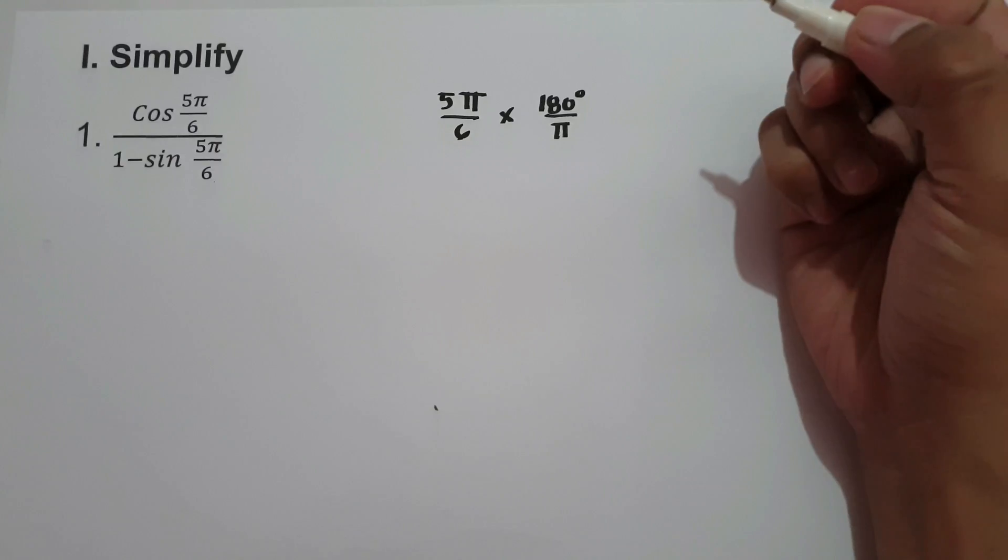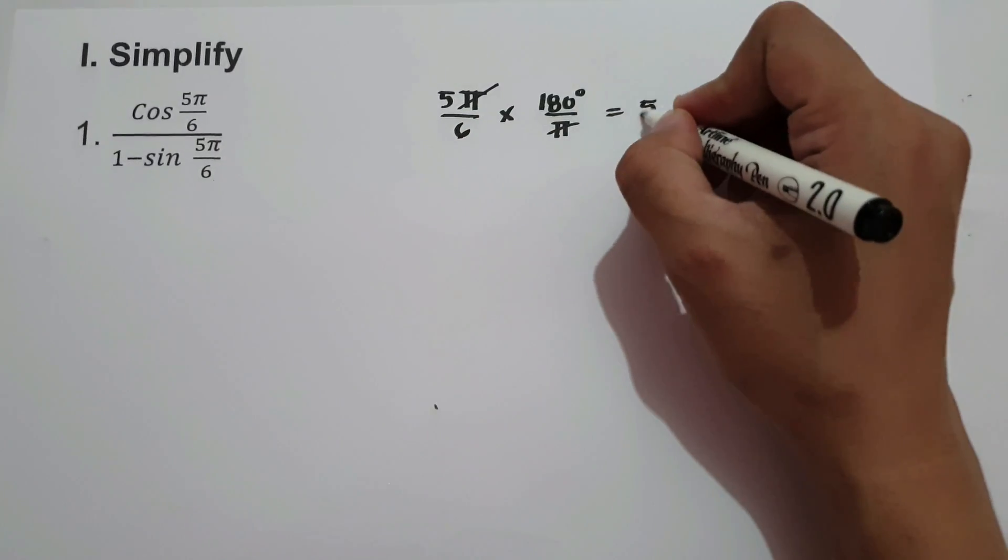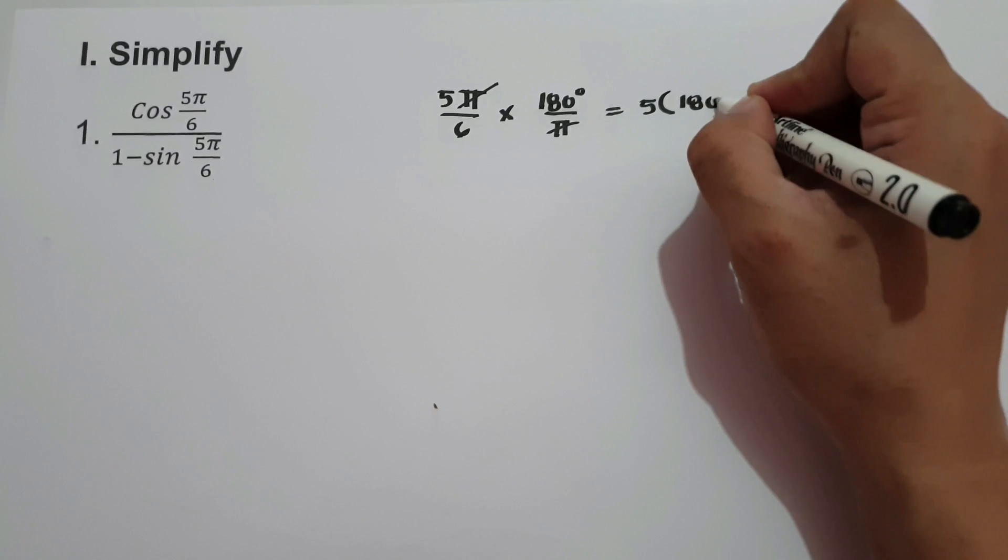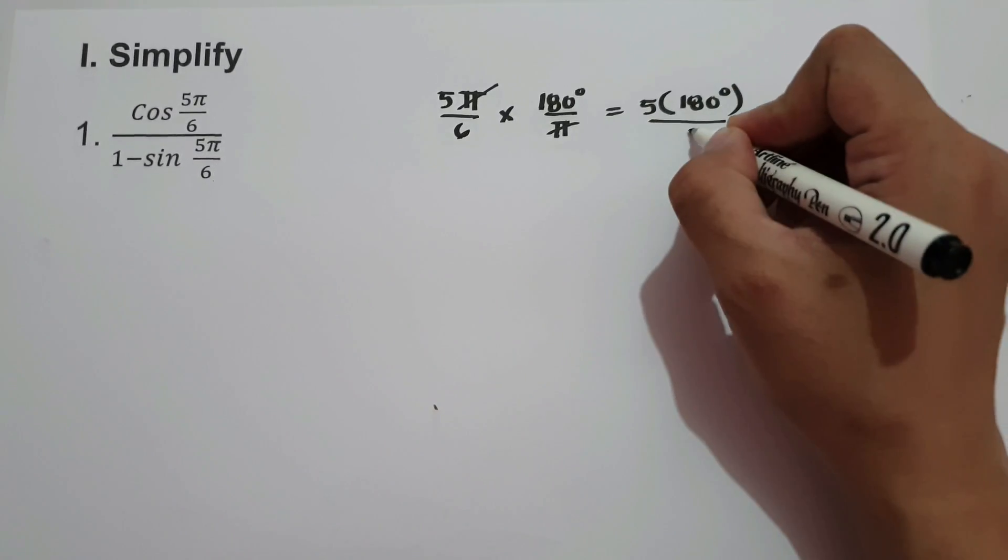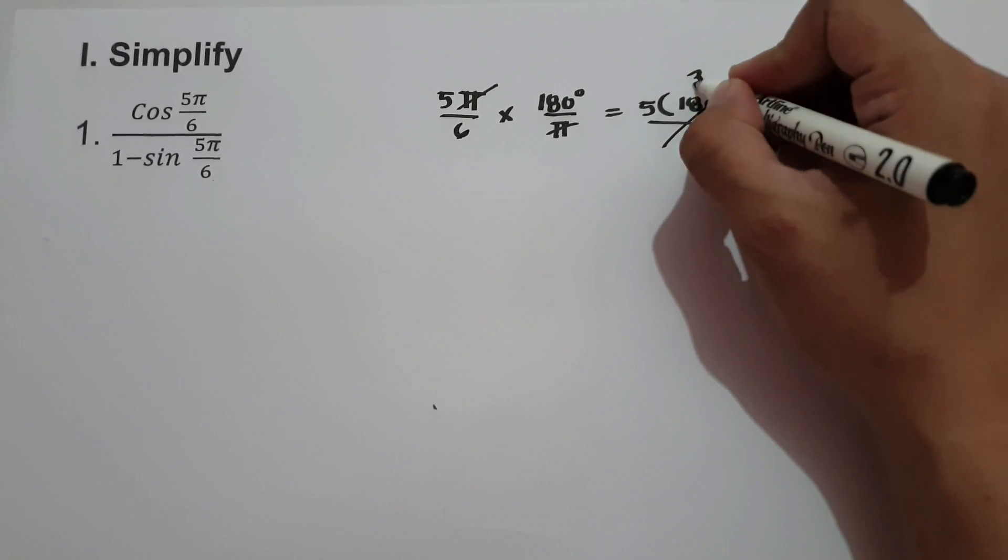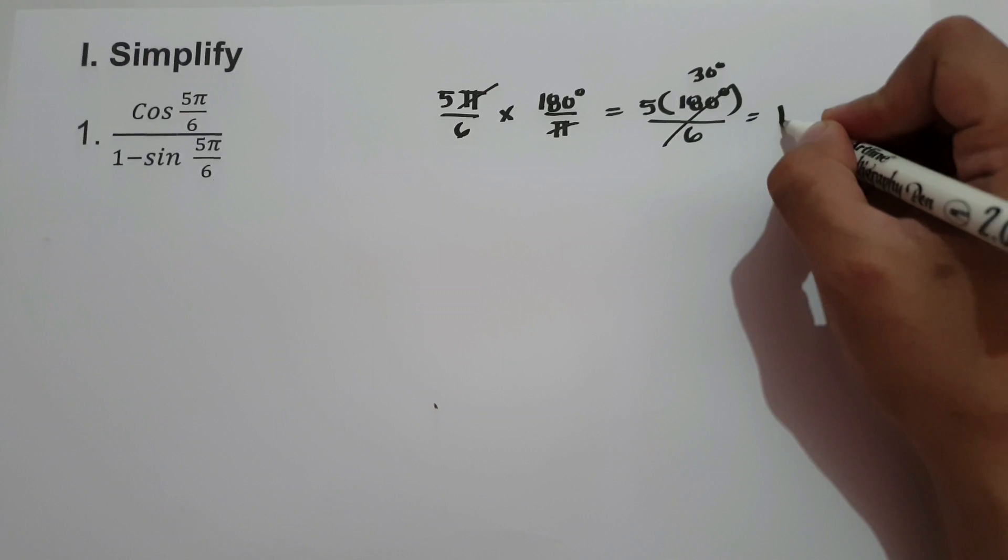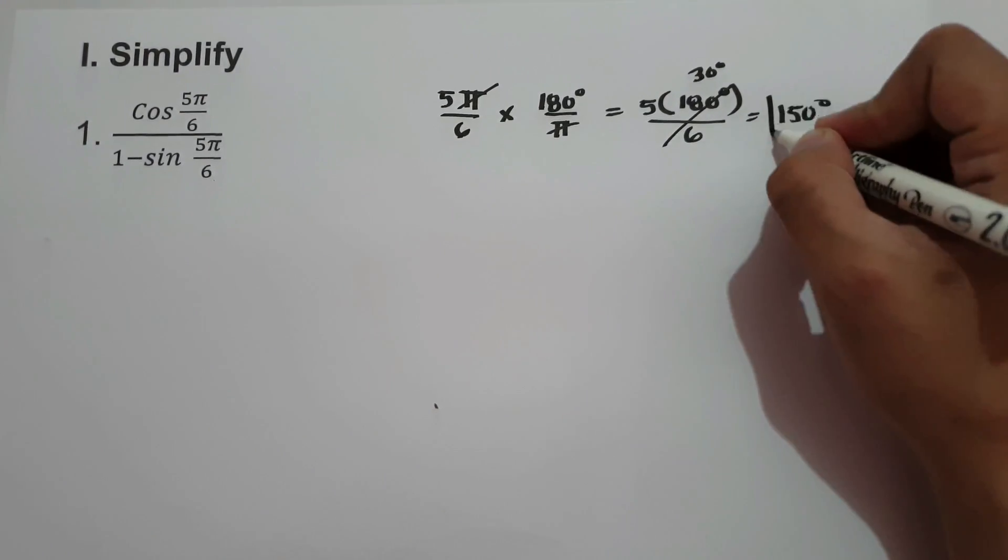To convert into degrees, let us cancel π and we have 5 times 180 degrees over 6. 180 degrees divided by 6 is 30 degrees, and 30 degrees times 5 is 150 degrees.